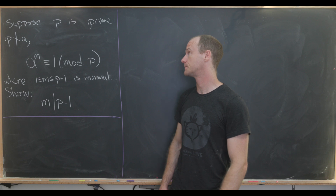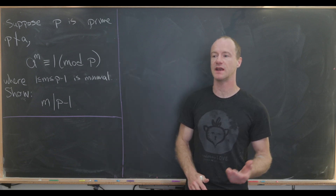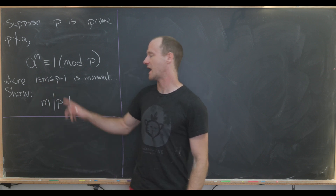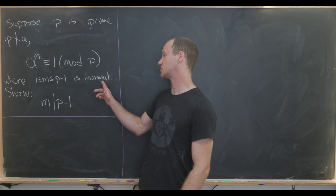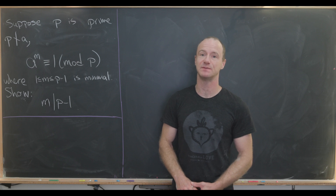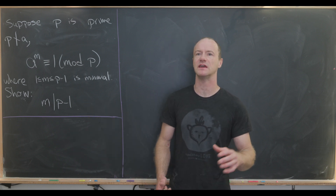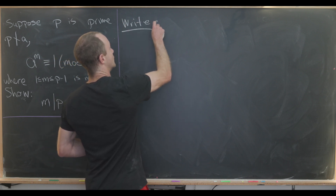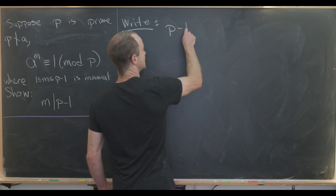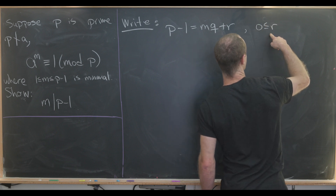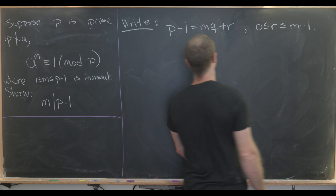Now for our last example, I will pass it off to Michael and he will finish this video off. So let's suppose that P is prime and P does not divide A — that's our setup for Fermat's theorem. Furthermore, we want to suppose that we have a number M between 1 and P minus 1 chosen to be the smallest such number that A to the M is congruent to 1 mod P. Our goal is to show that M divides P minus 1. We're going to use the standard trick to prove divisibility: use the division algorithm and show that the remainder must be equal to 0. So we want to use the division algorithm with P minus 1 and M, meaning we can write P minus 1 as M times Q plus R, where R must be between 0 and M minus 1.